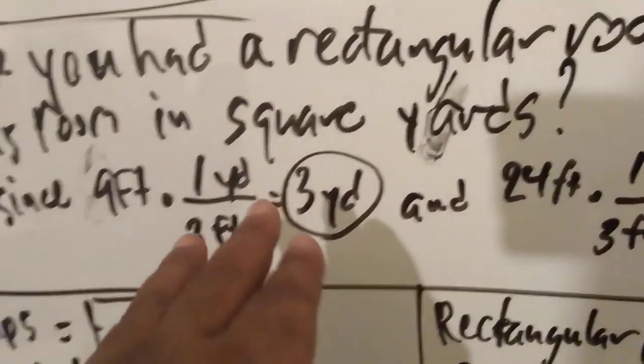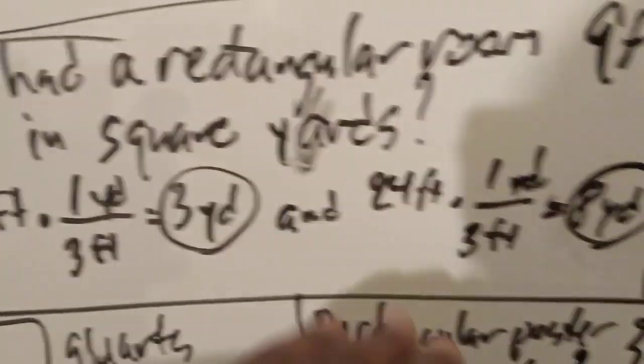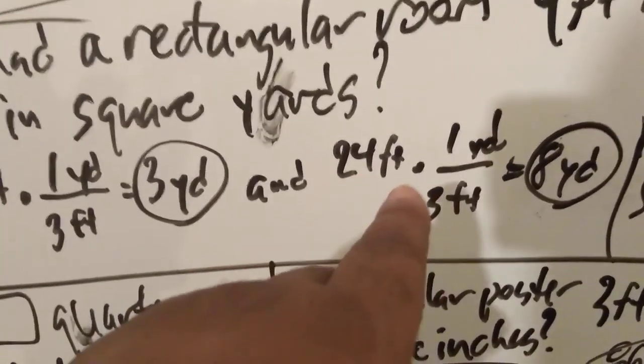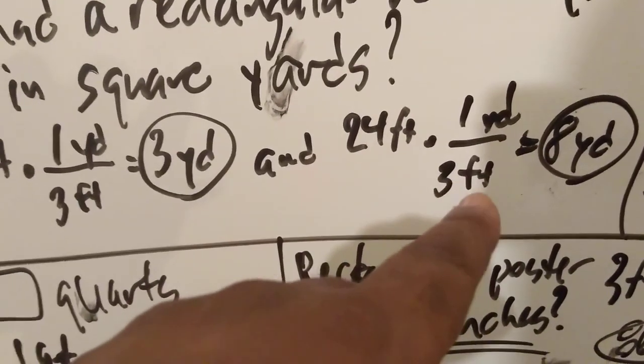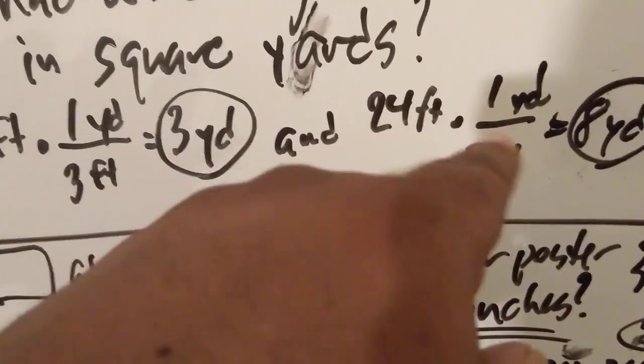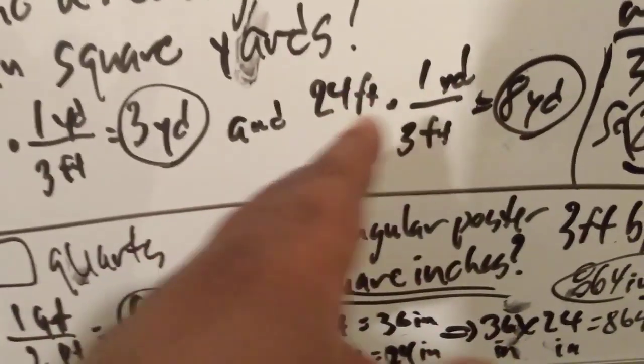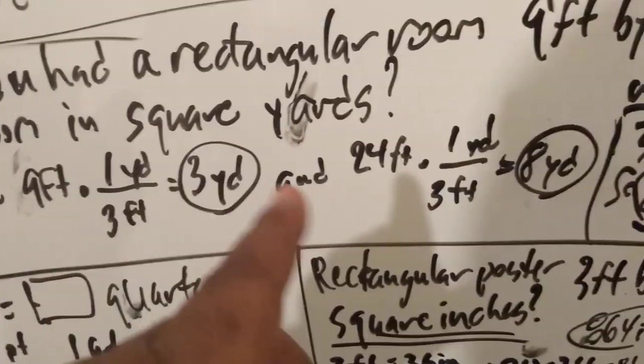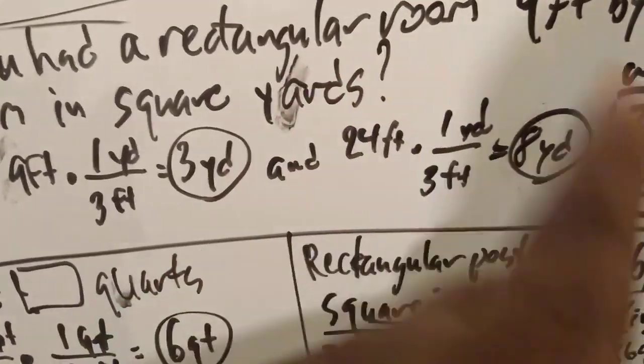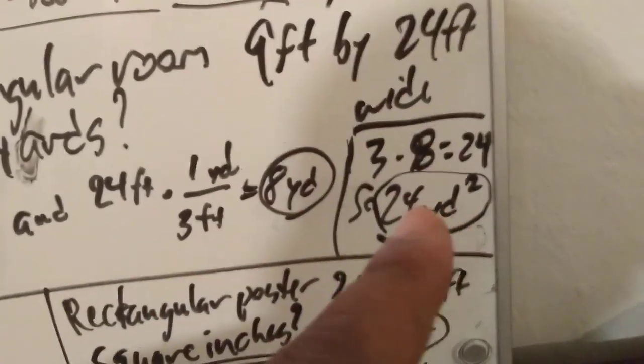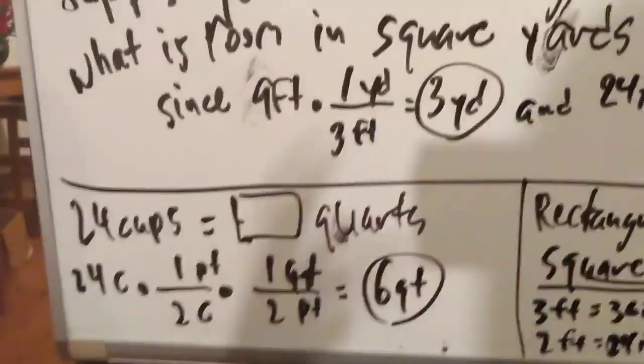Likewise, 24 times 1 yard over 3 feet, so 24 divided by 3 is 8. So 24 feet is 8 yards. But we want square yards, so 3 yards by 8 yards is 24 yards squared. That's how that problem works because you gotta multiply to find an area, which is multiplying length by width.